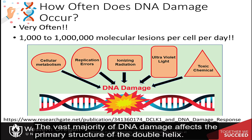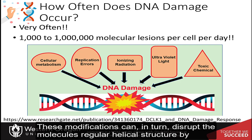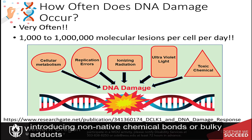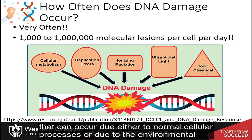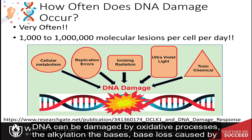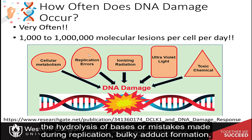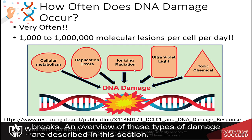The vast majority of DNA damage affects the primary structure of the double helix — that is, the bases themselves are chemically modified. These modifications can, in turn, disrupt the molecule's regular helical structure by introducing non-native chemical bonds or bulky adducts that do not fit in the standard double helix. There are several types of DNA damage that can occur due either to normal cellular processes or due to environmental exposure: oxidative processes, alkylation of bases, base loss caused by hydrolysis or replication mistakes, bulky adduct formation, DNA cross-linking, and DNA strand breaks, including both single and double-stranded breaks.